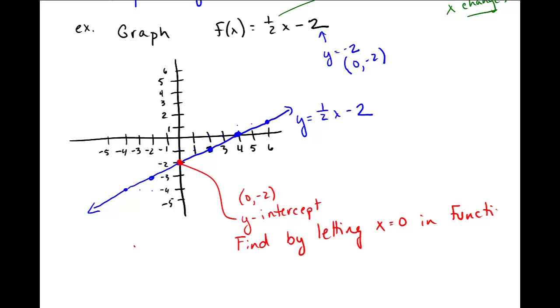In my original function, I had f(x) equals one half x minus 2. If I find f(0) and let x be 0, I get one half times 0 minus 2, and that's equal to negative 2. That's my y-intercept.